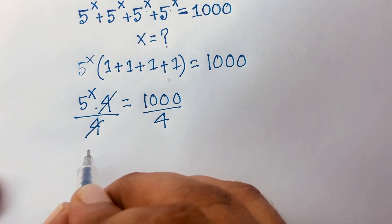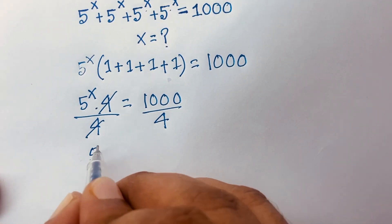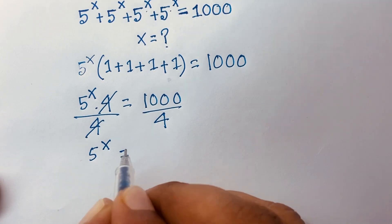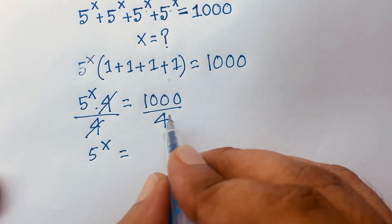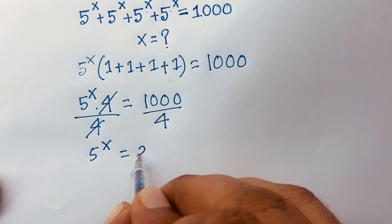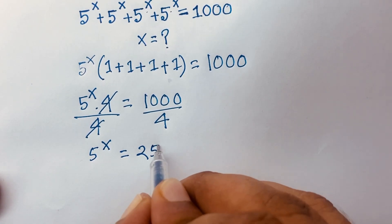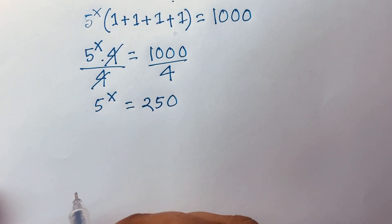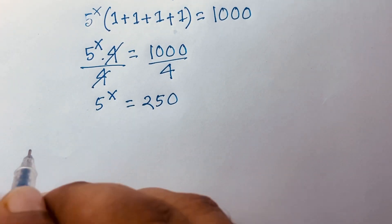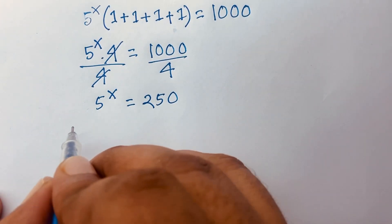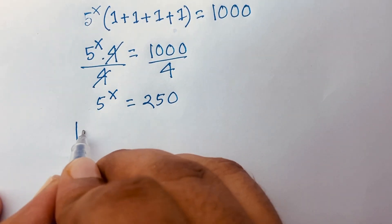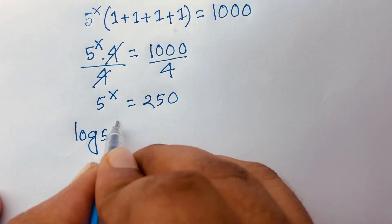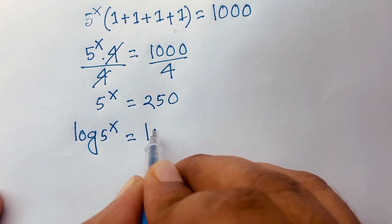Dividing both sides by 4, the 4s cancel and we find 5 to the power x is equal to 1000 divided by 4, which is 250. Now I apply log to both sides, so log of 5 to the power x equals log 250.